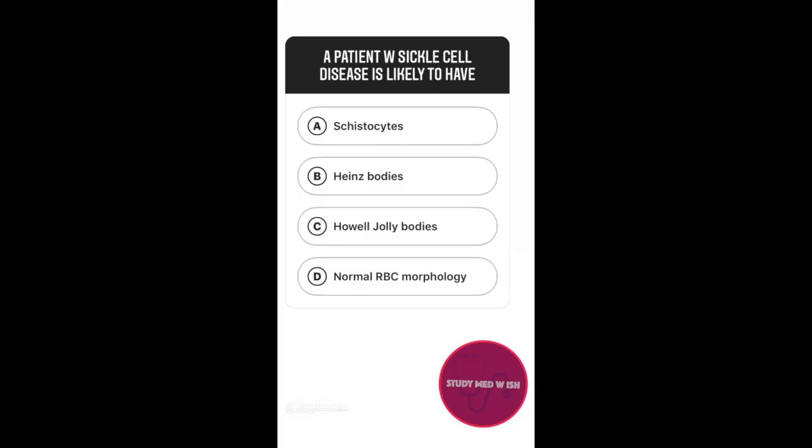Question number 2. A patient with sickle cell disease is likely to have option A, schistocytes. Option B, Heinz bodies. Option C, Howell-Jolly bodies. Option D, normal RBC morphology. The answer to this question is Howell-Jolly bodies.